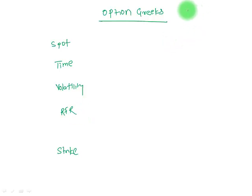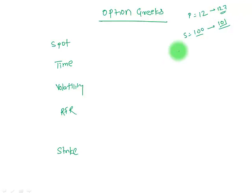For example, we are looking at an option trading in the market at a price of 12. The spot price of the underlying asset was 100 rupees — it's a call option. The spot price went from 100 to 101, so it increased by one rupee, and the option increased from 12 to 12.7. So one rupee increase in the underlying asset increased the option price by 0.7. This relationship of spot price and option price is denoted by a Greek letter called Delta.